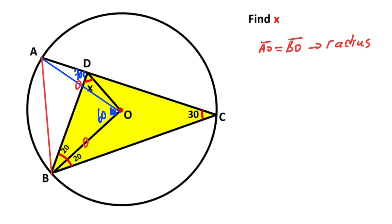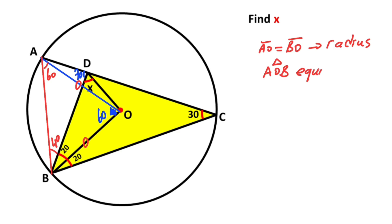Now connect point A and point B. Notice that if the central angle is 60 degrees, these base angles are also 60 degrees, so 60 degrees are left here — that means we get an equilateral triangle. Therefore triangle AOB is an equilateral triangle.